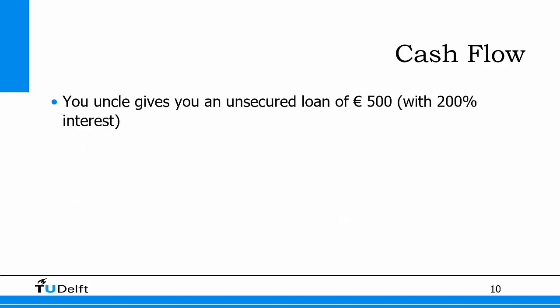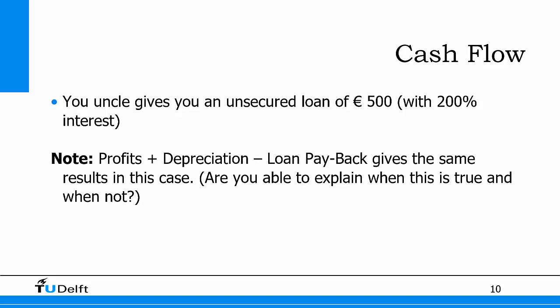Luckily, an uncle offers you an unsecured loan at 200% interest for one year — he loans you the 500 euros so you can continue your taxi company. Note that profits plus depreciation minus the loan payback gives the same result in this case. For simple calculations this is always true, though in the business game your final results may differ due to timing differences between cash payments and profit statement elements. For quick estimates, you can use this formula to estimate cash flow from the profit statement.